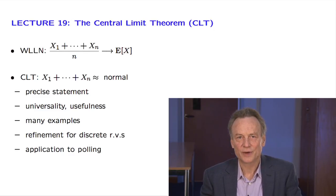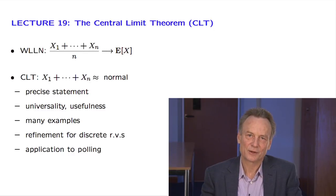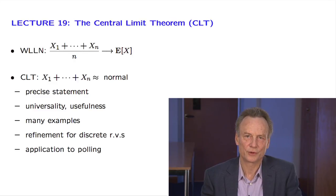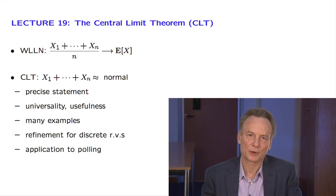The central limit theorem provides us exactly with this kind of detail. It tells us that the sum of many independent identically distributed random variables has approximately a normal distribution. The mean and variance of this normal is easy to find if we know the mean and variance of the original random variables. This enables us to carry out approximate calculations rather quickly by using the normal tables.